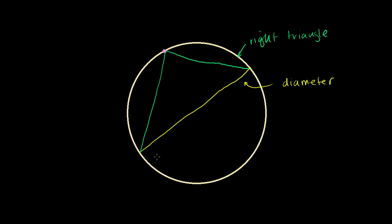We have in our toolkit the notion of an inscribed angle and its relation to a central angle that subtends the same arc. So let's say that this is an inscribed angle right here — let's call this theta. Let's say that's the center of my circle right there. Then this angle right here would be a central angle. This is a radius, and this is a radius — this is the same radius.